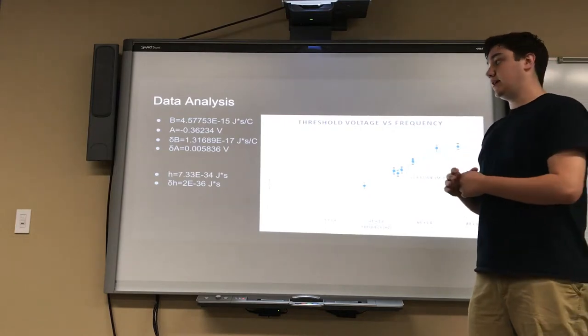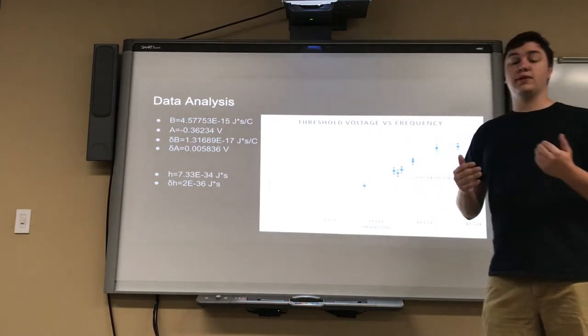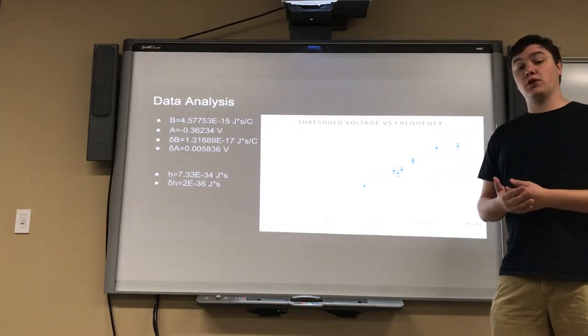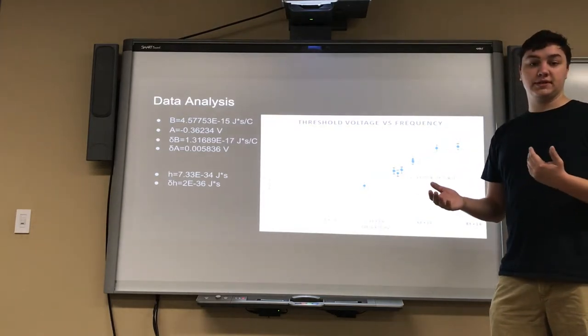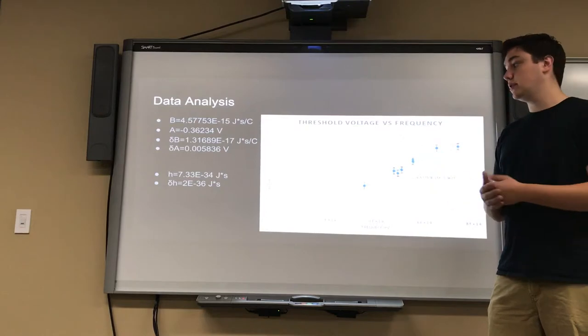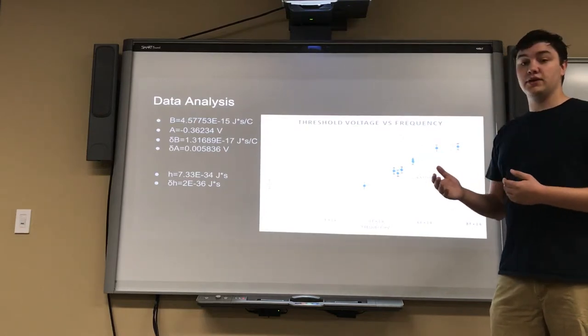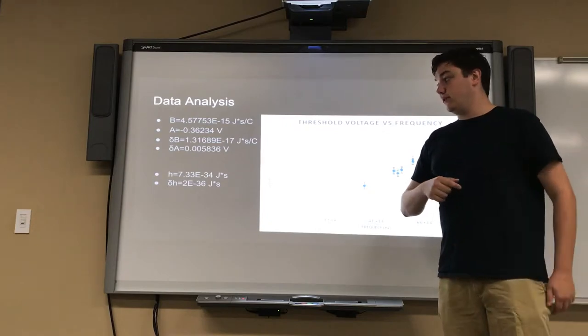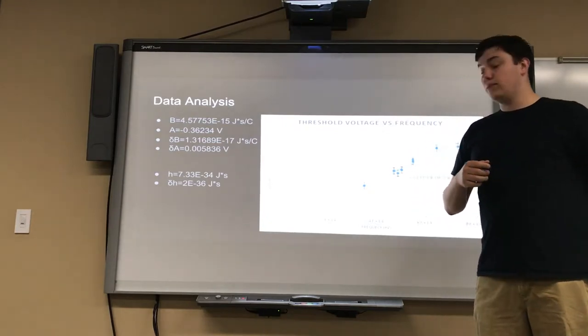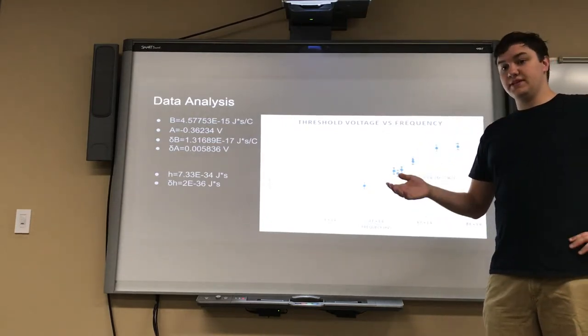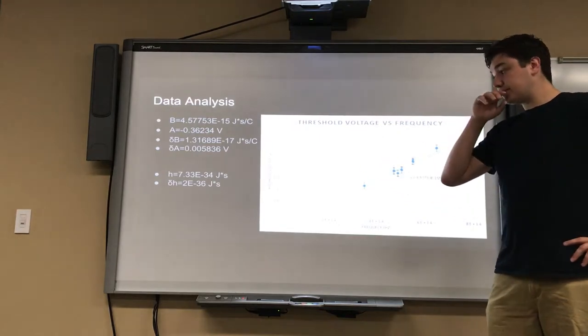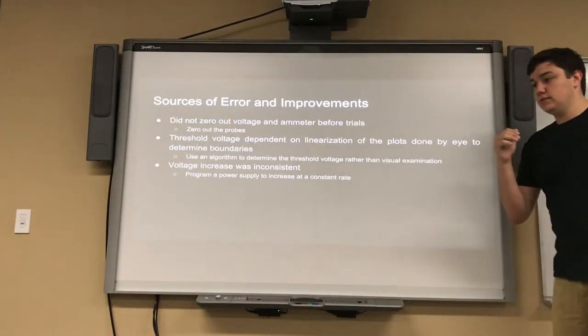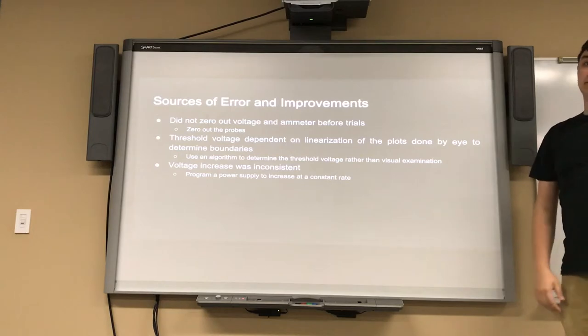We determined that this slope is actually our Planck's constant divided by our elementary charge unit which is the 1.6 times 10 to the negative 19th coulombs. So multiplying that should give us our Planck's constant. We determined our Planck's constant to be 7.33 plus or minus 0.02 times 10 to the negative 34th joule seconds. And now Kyle will talk about error in our conclusion.